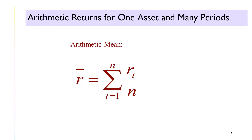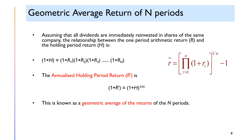The arithmetic return for 1 asset and many periods is a simple average of the yearly returns. It is the sum of the annual returns divided by the number of years. The geometric return is the compound annual rate of return. It is the nth root of the product of the holding period returns for n years.